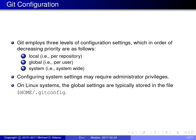Git has a number of configuration settings at three levels: local, global, and system, in decreasing order of priority. A local setting overrides a global setting, and a global setting overrides a system-wide setting. Local settings apply on a per-repository basis, global settings apply for all repositories a user is using, and system settings apply system-wide to all users. On many systems, system settings require administrator privileges. On Linux systems, global settings are typically stored in a file under your home directory called .gitconfig.